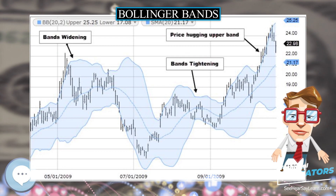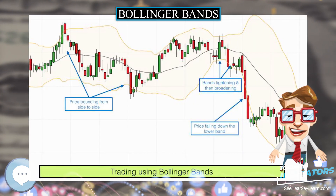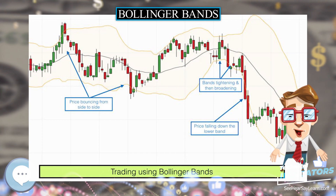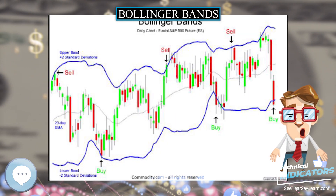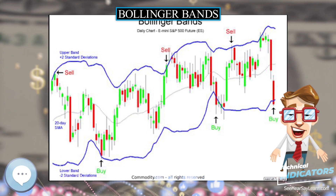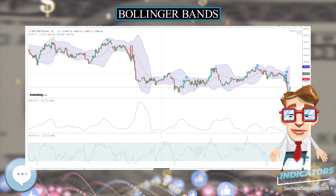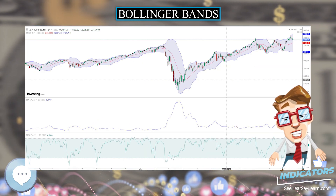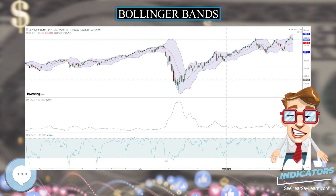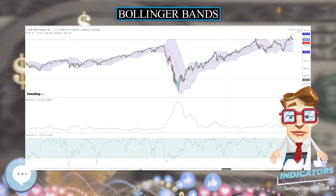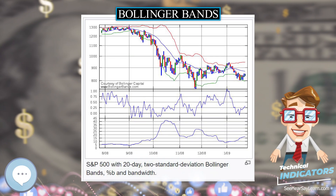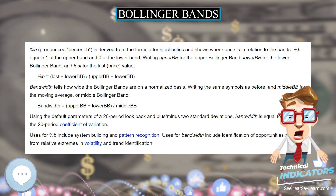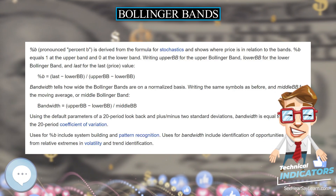In Spring 2010, Bollinger introduced three new indicators based on Bollinger Bands: BB Impulse measures price change as a function of the bands; percent bandwidth, or percent B, normalizes the width of the bands over time; and bandwidth delta quantifies the changing width of the bands. Percent B is derived from the formula for stochastics and shows where price is in relation to the bands.